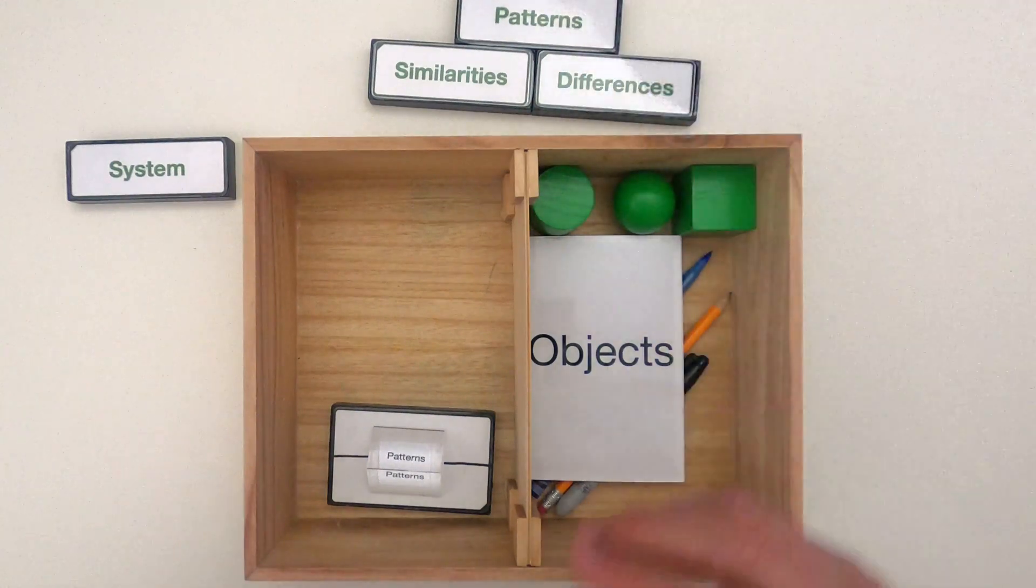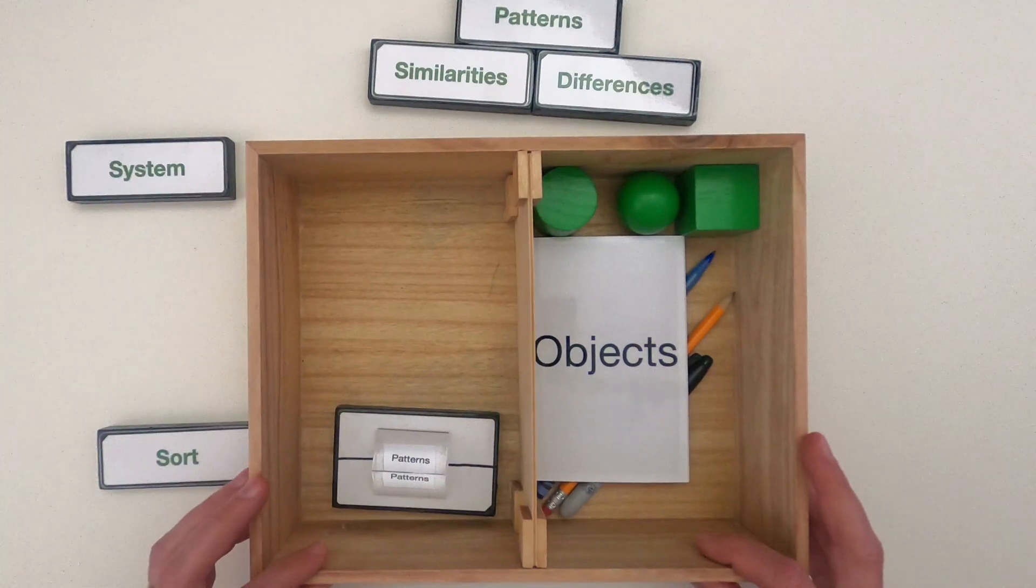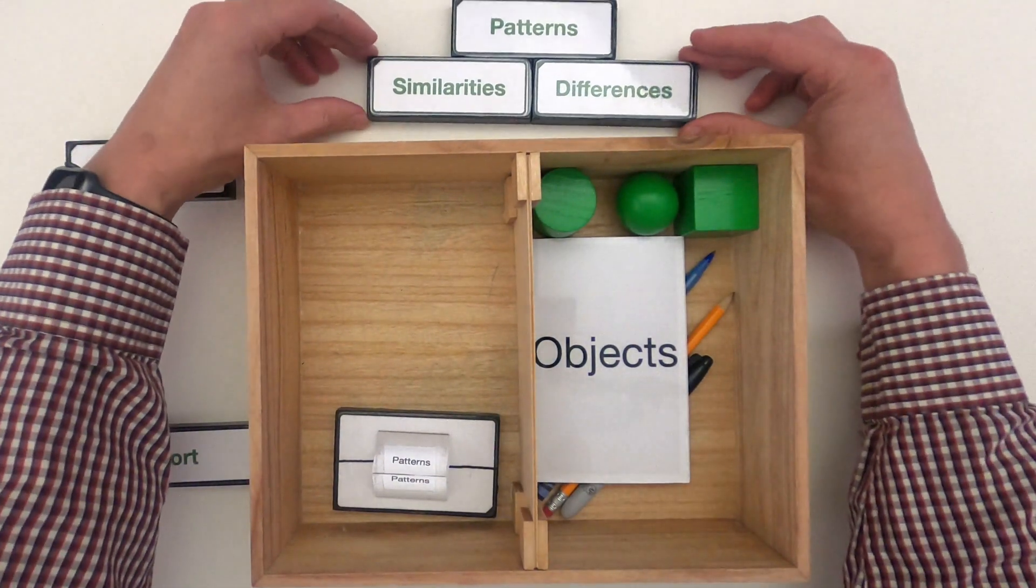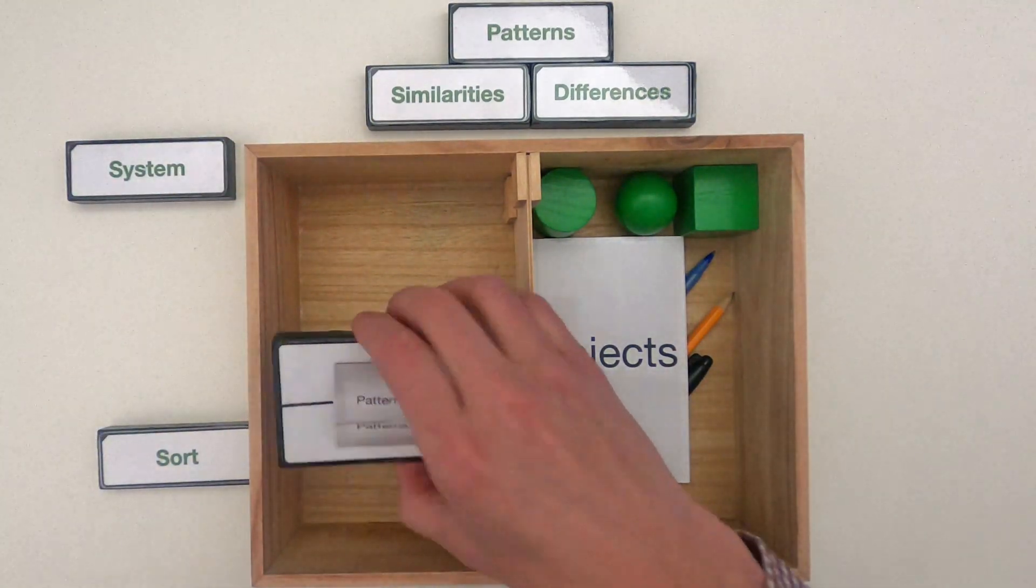Because by looking for similarities and differences we can better understand the system and we can eventually start to sort the different parts of the system, classify them, and more importantly analyze.